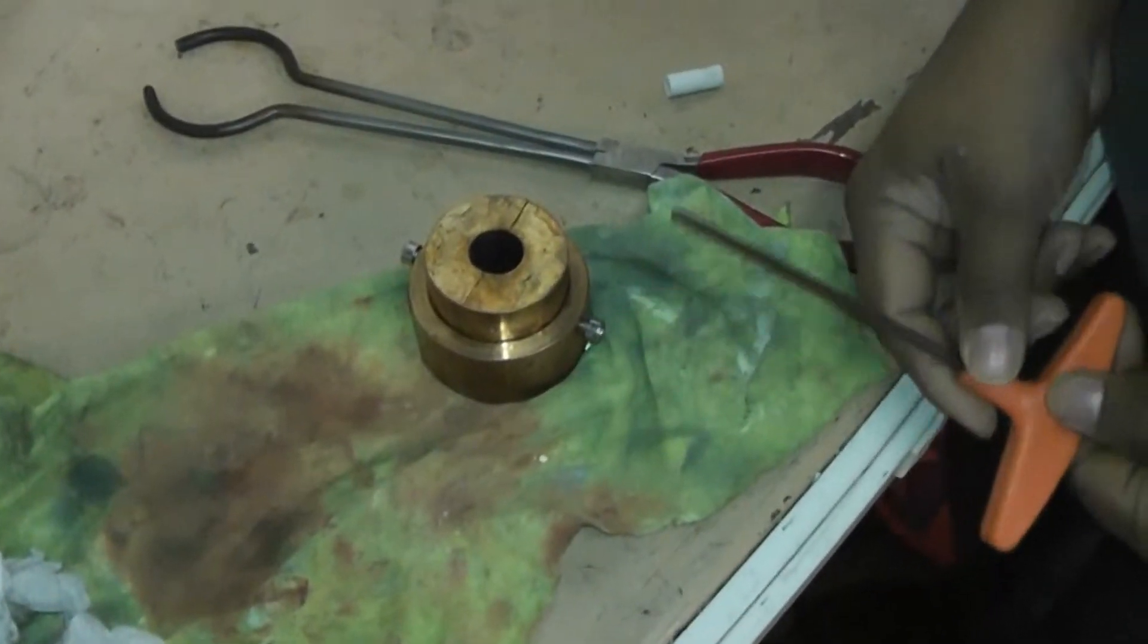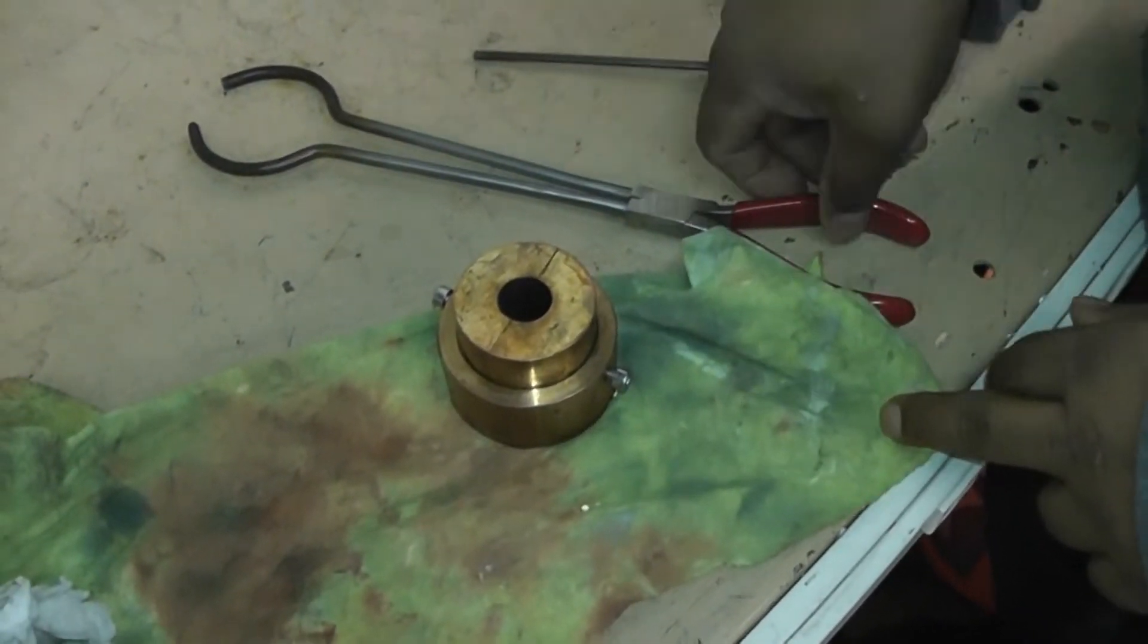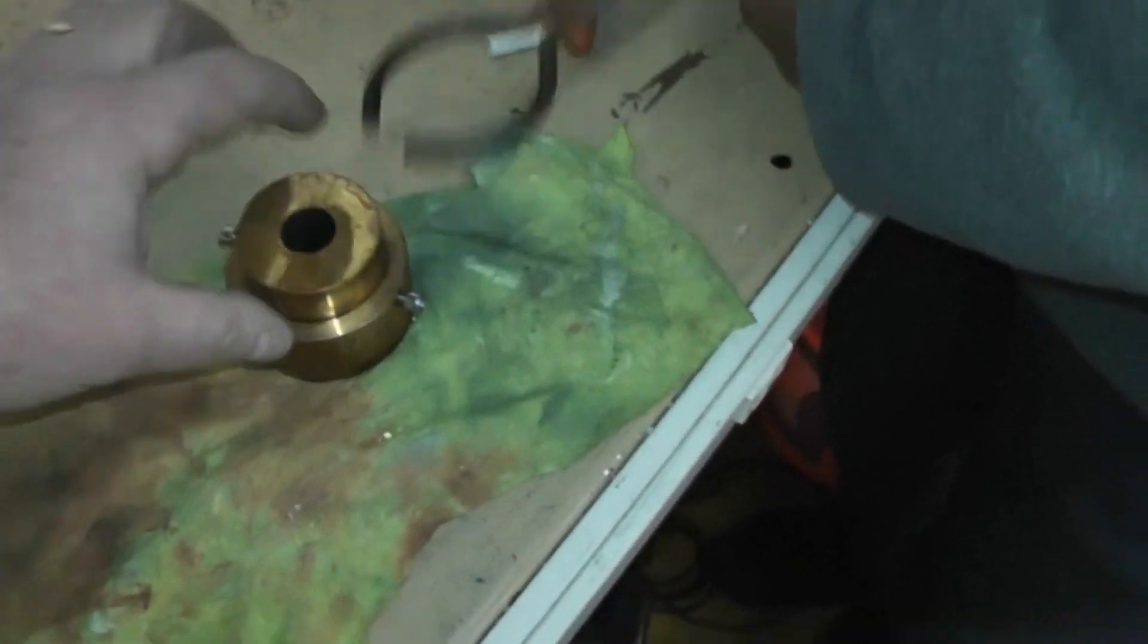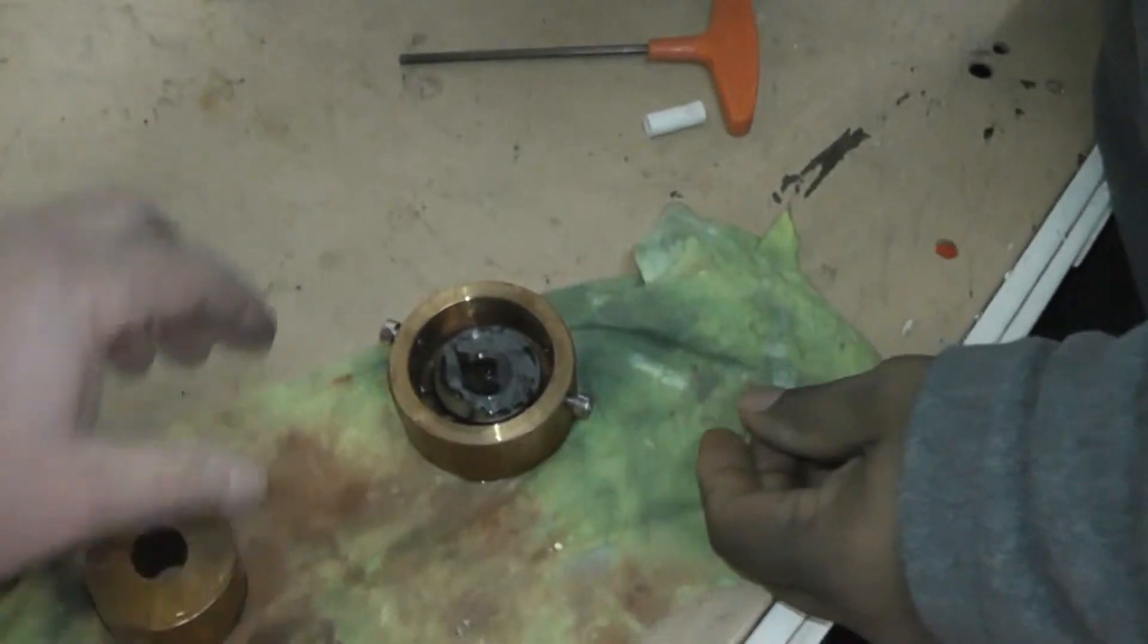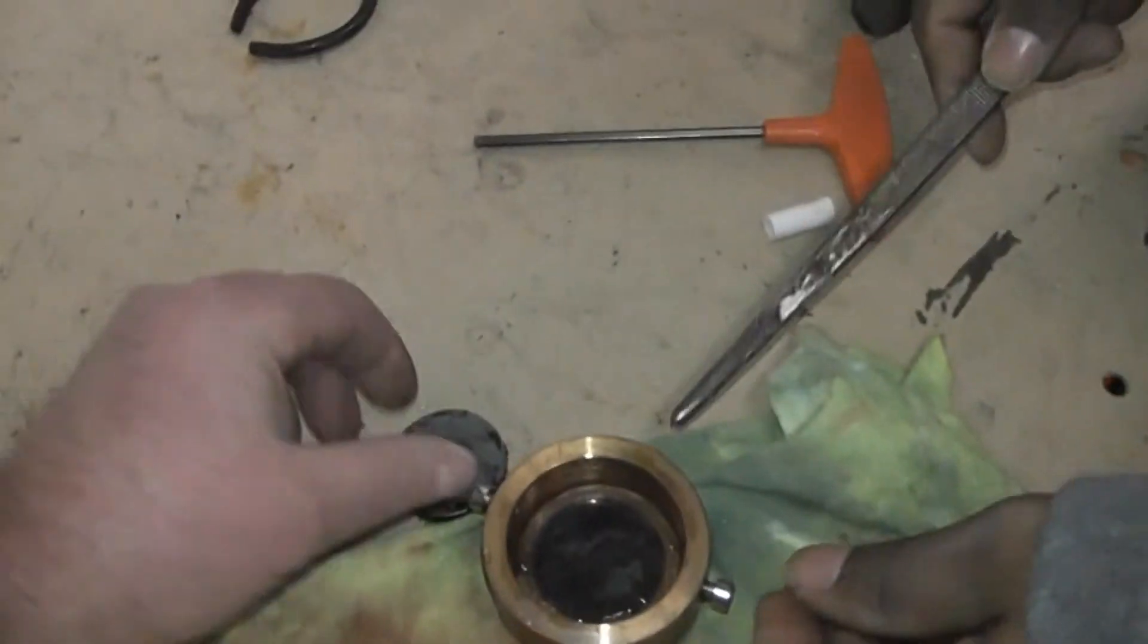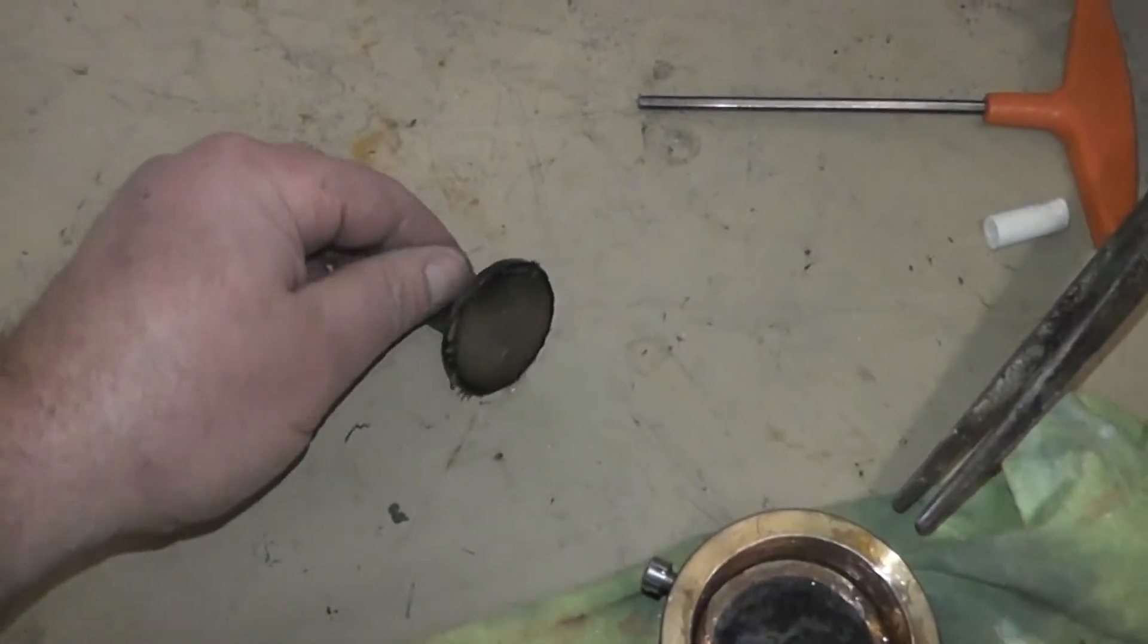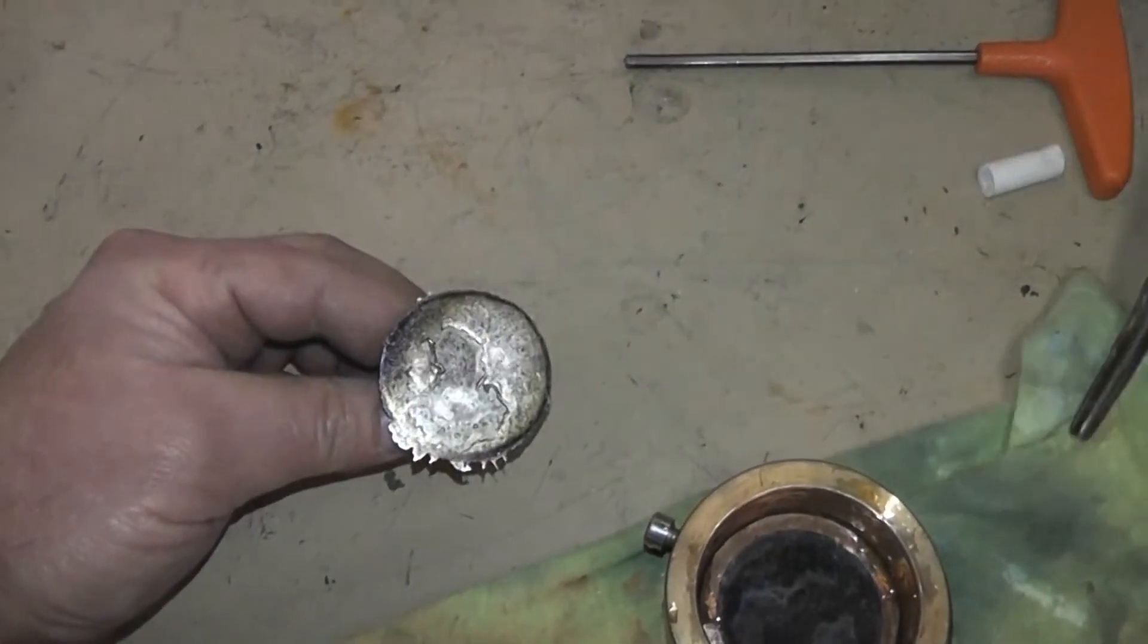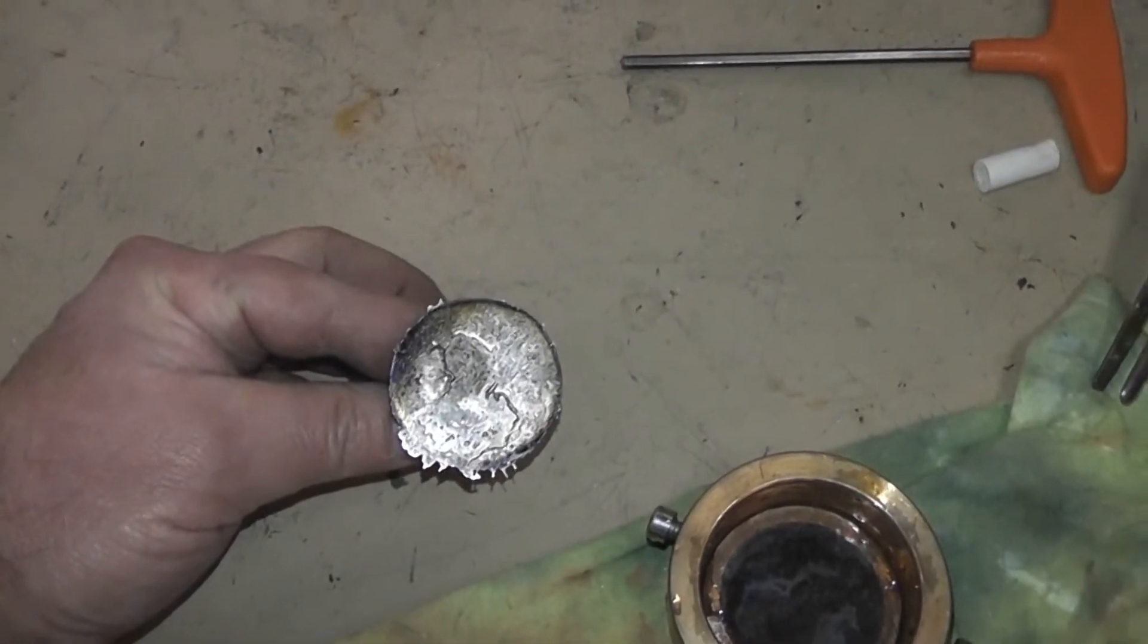Now we are going to open the ingot mold and take a look at the coin that we cast. We have got a nice coin that can now be surfaced and analyzed on a spectrometer.